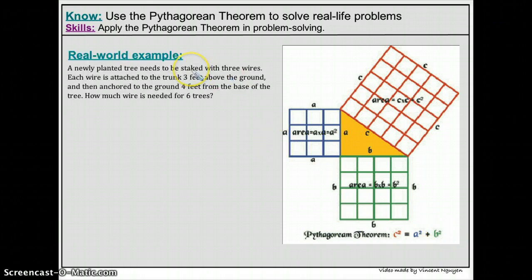So let's look at this example. It says a newly planted tree needs to be staked with three wires. Each wire is attached to the trunk three feet above the ground, and then anchored to the ground four feet from the base of the tree. How much wire is needed for six trees?